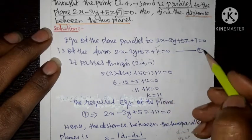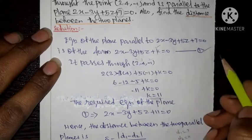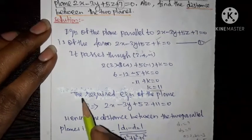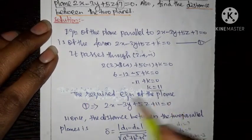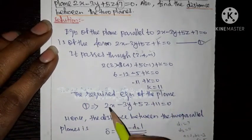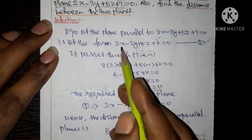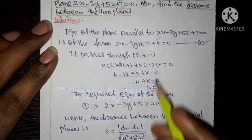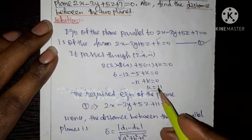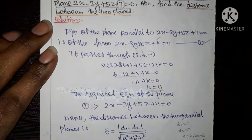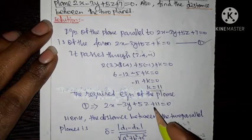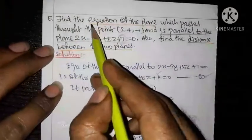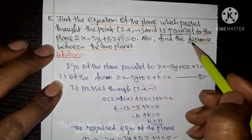Since k equal to 11, substituting back into equation 1, the required equation of the plane is 2x minus 3y plus 5z plus 11 equal to 0. The first condition — finding the equation of the plane — is now complete.